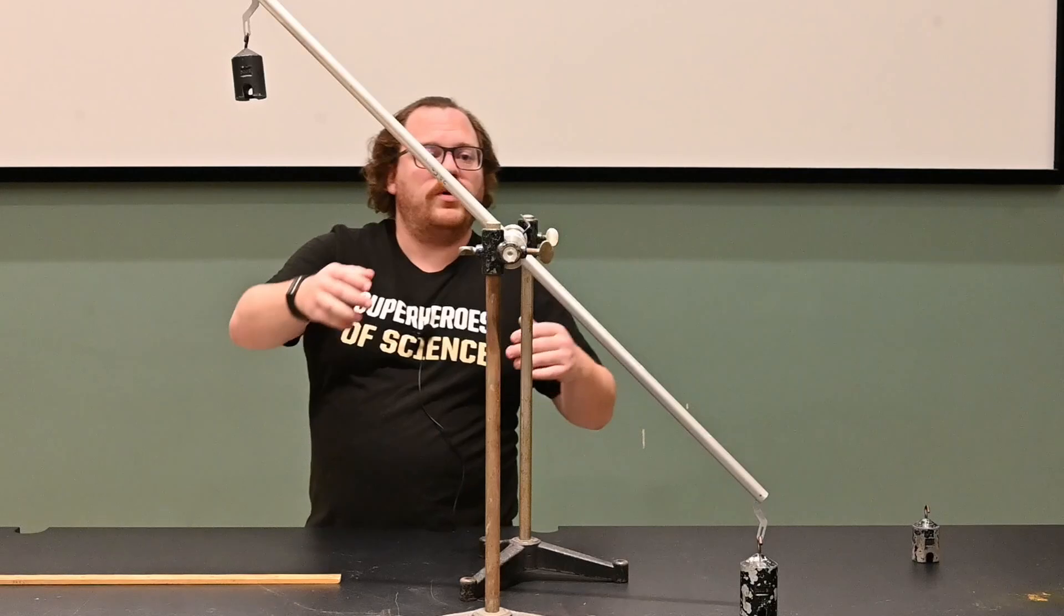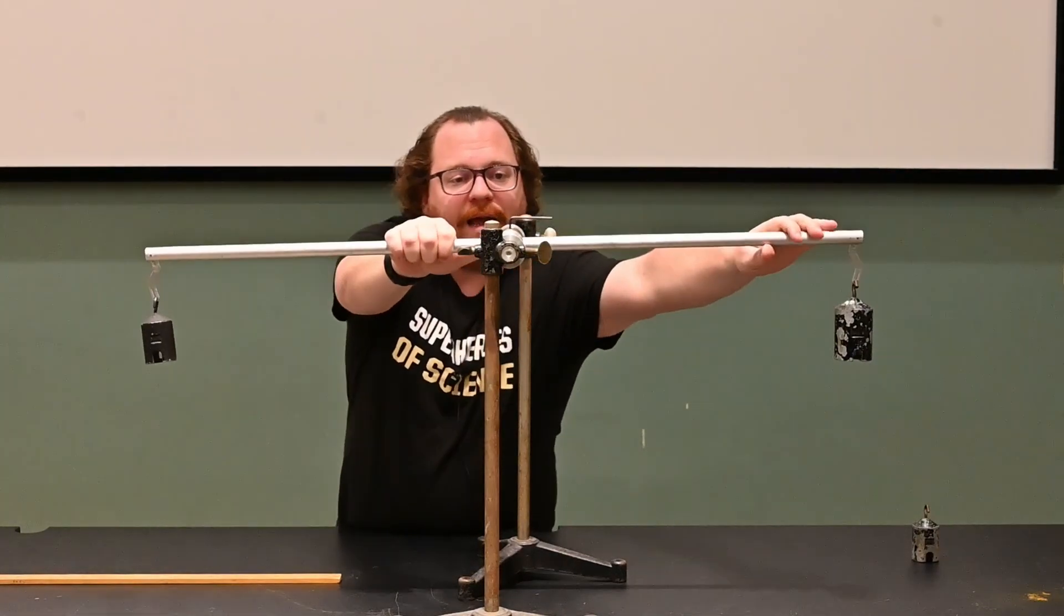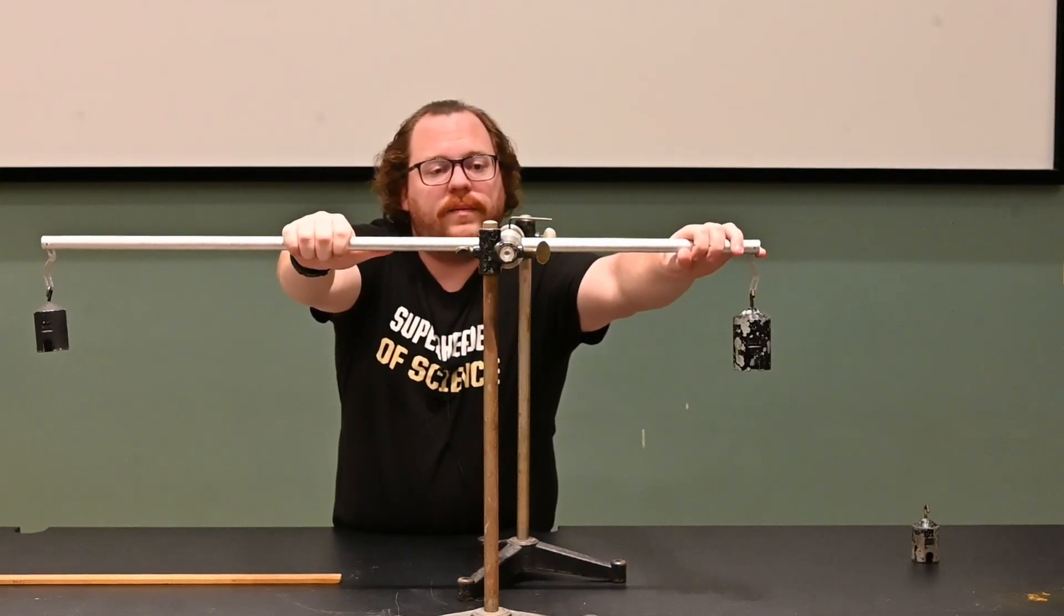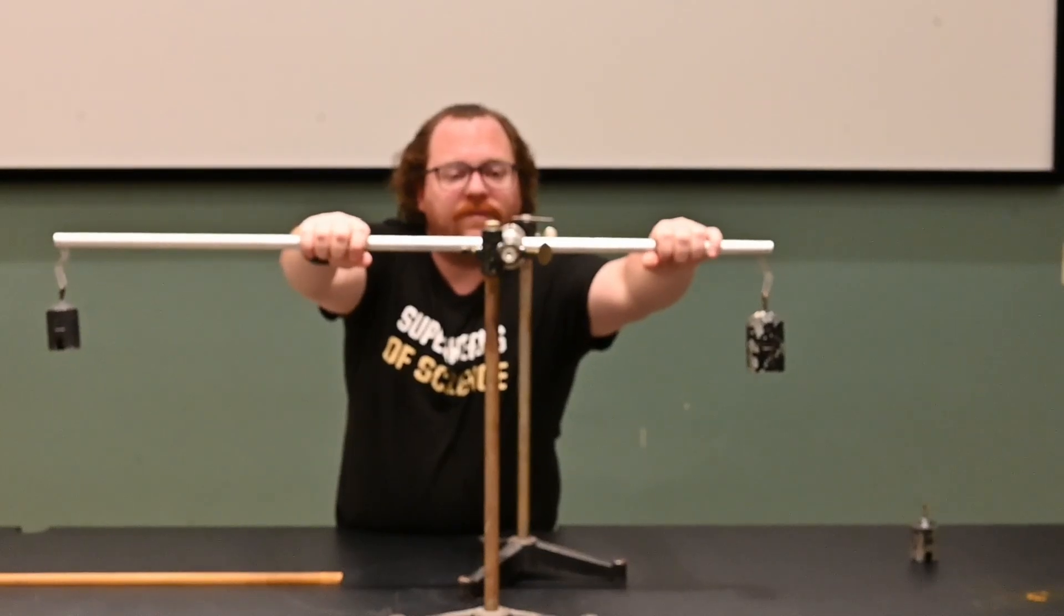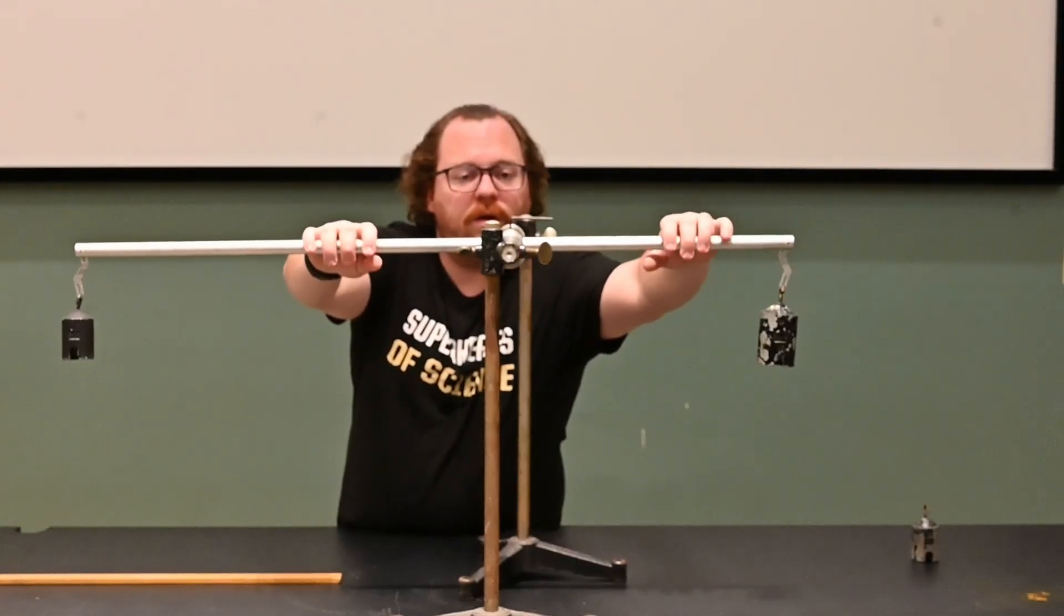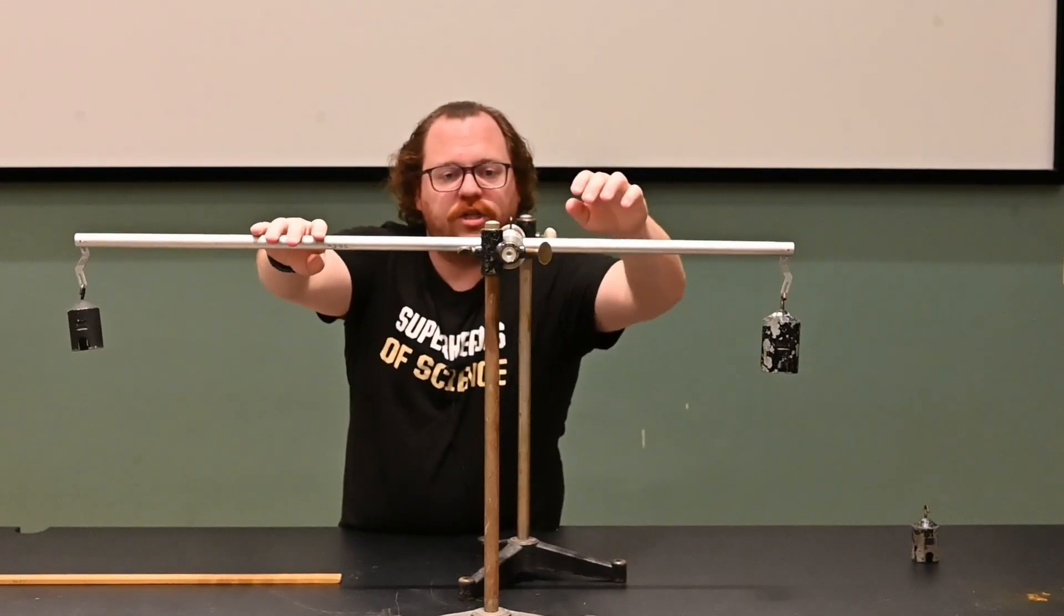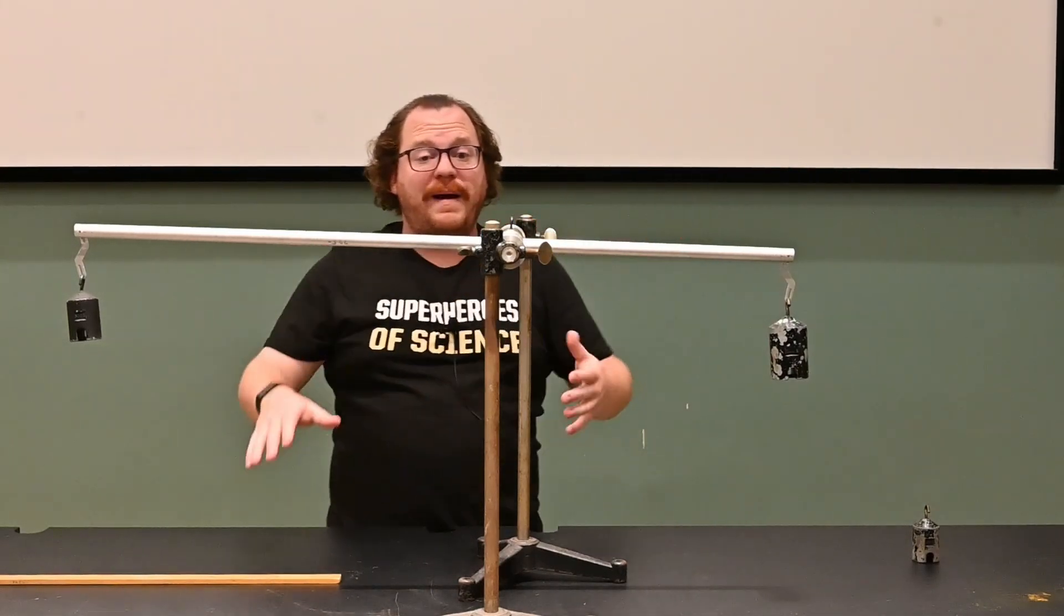Now, with this particular bar, I can unlock it, and I can actually change where the bar is located and move it in and out, left and right, until eventually I find a point where it balances again. Let me lock the bar so that I don't jostle it and surprise myself by having it start rotating. It's balanced again.